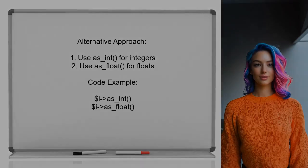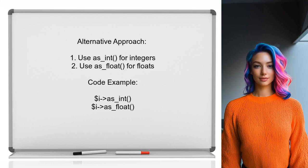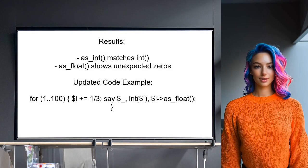An alternative approach to downgrading a BigRat instance is to use the methods provided by MathBigRat. You can convert it to an integer using asInt or to a float using asFloat. The user demonstrated this by printing the results of both methods alongside the original integer and float values. The user found that asInt works as expected, matching the int function. However, they noticed some unexpected results with asFloat, where all decimal places appeared as zero.